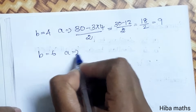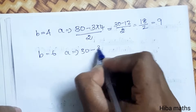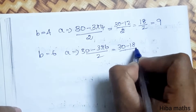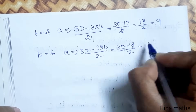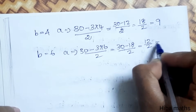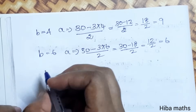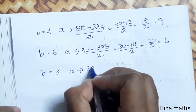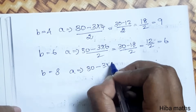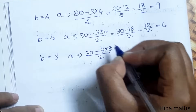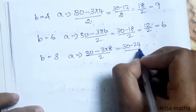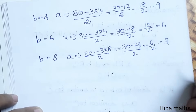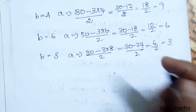Substituting b equals 6: a equals (30 minus 3 times 6) divided by 2. That is (30 minus 18) divided by 2, which is 12 divided by 2, equal to 6. Substituting b equals 8: a equals (30 minus 3 times 8) divided by 2, which is (30 minus 24) divided by 2, equal to 6 divided by 2, that is 3. So we have found 4 pairs.